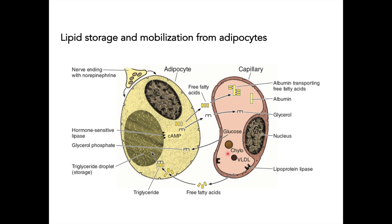Triglycerides carried in lipoproteins encounter lipoprotein lipase present in the capillaries, which breaks down the triglycerides, releasing free fatty acids. These are then stored as triglycerides again as fat droplets. When energy is needed, norepinephrine nerve endings stimulate cyclic AMP, which activates hormone-sensitive lipase present in the adipocytes.